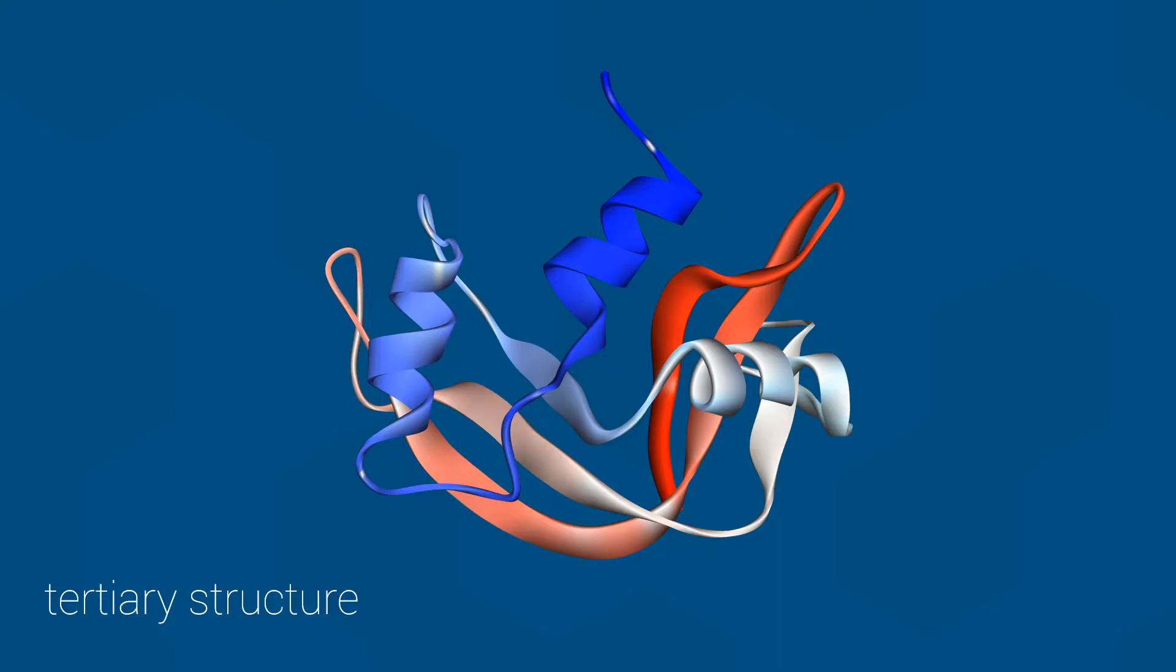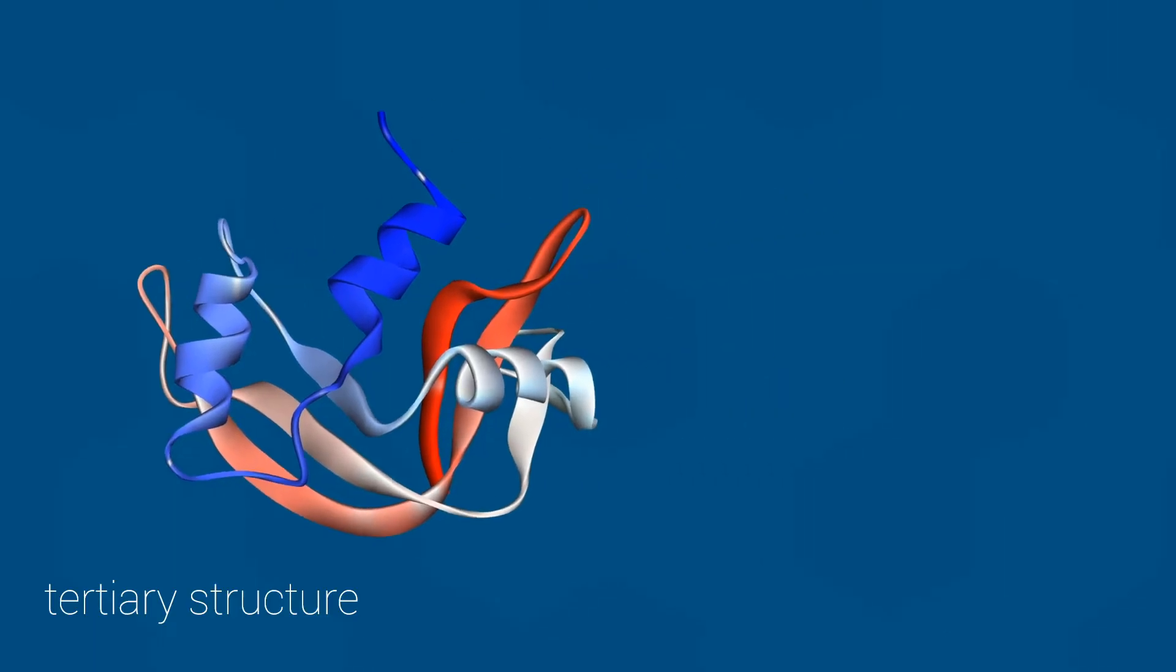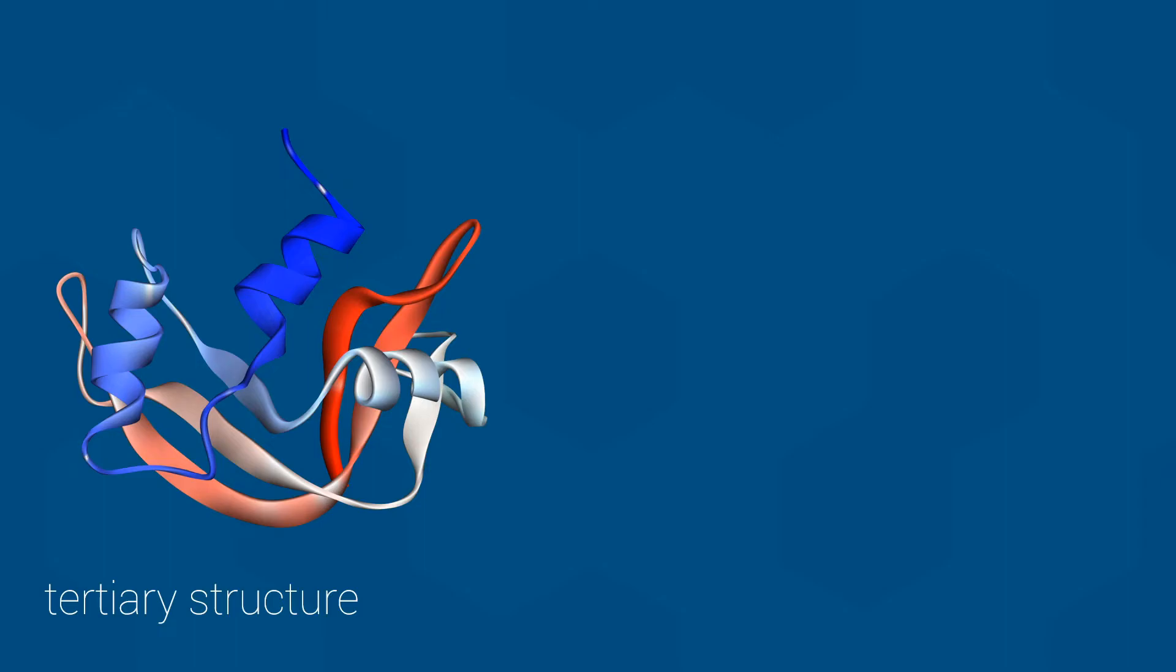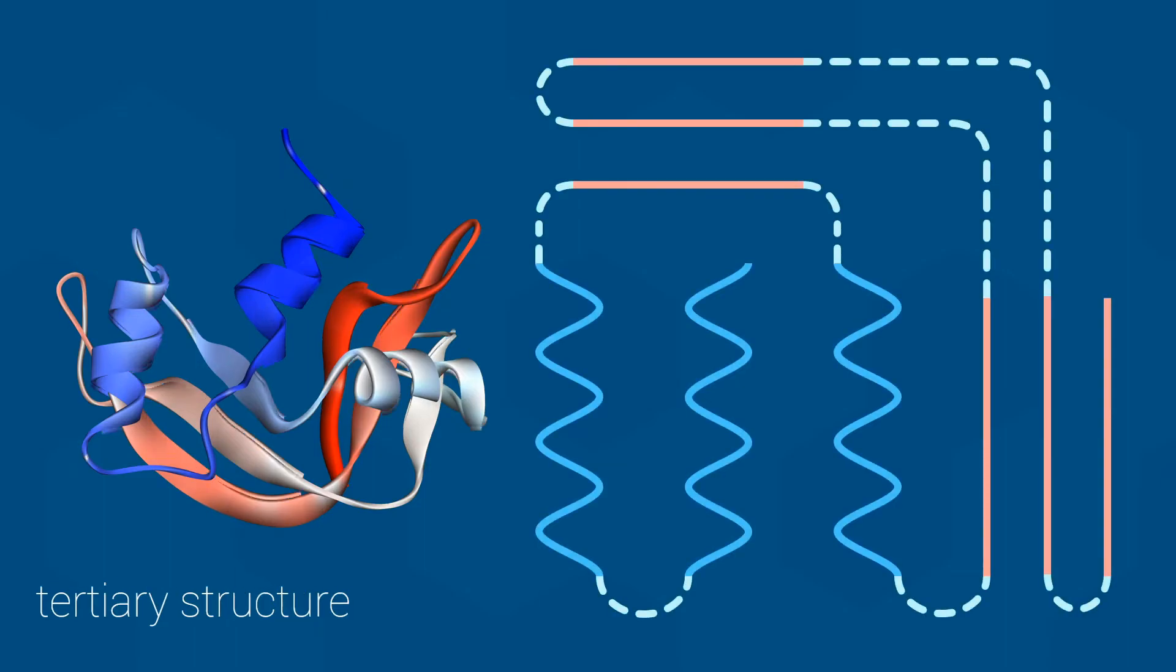As you can see here, the final RNase folded shape involves its alpha helices and beta sheets interacting with each other. If I was to show this schematically, which I will do, it would look something like this. Notice that both regions of the beta sheets and all three alpha helices are represented here.